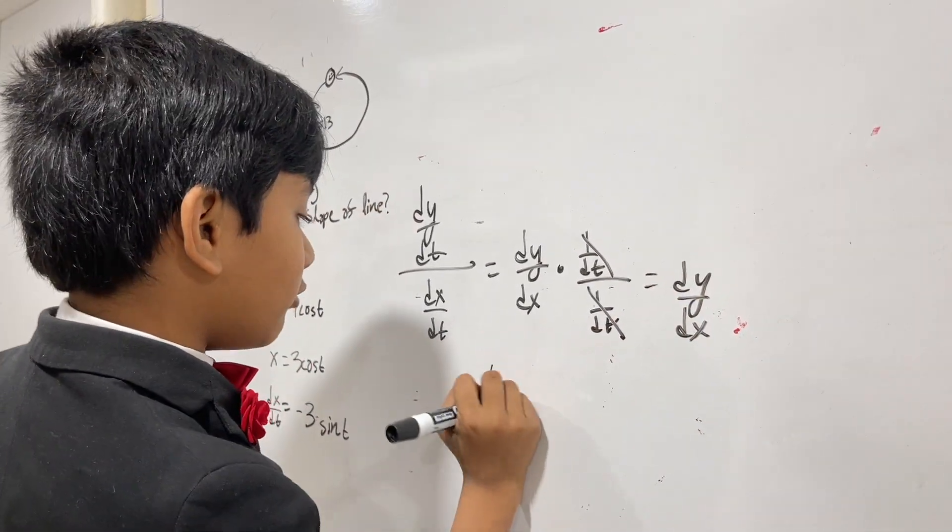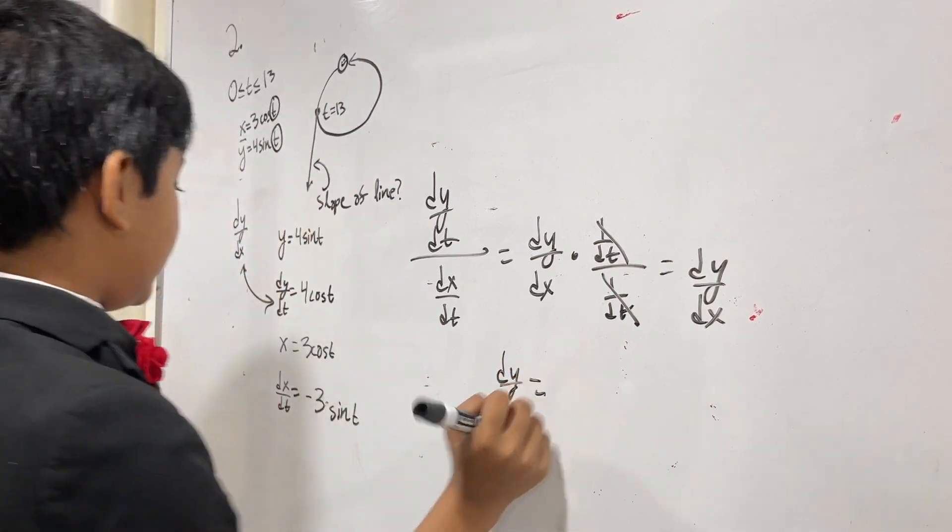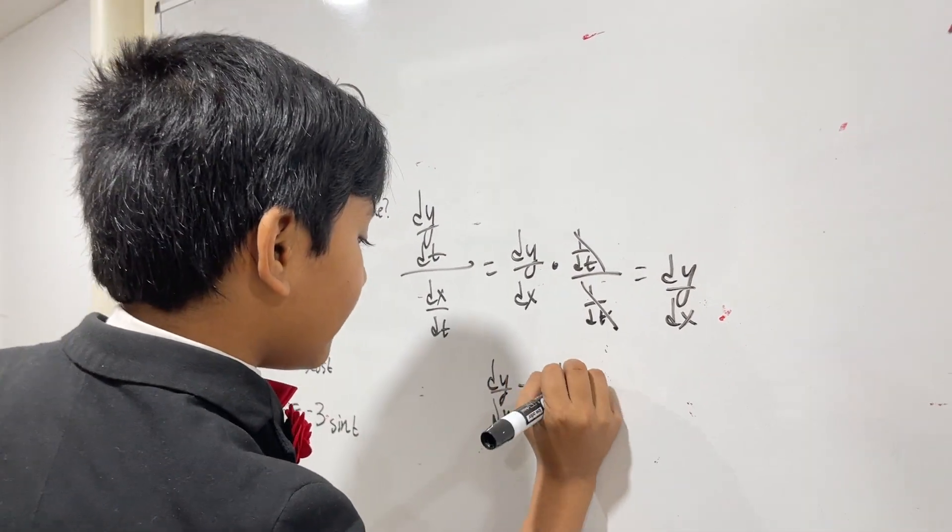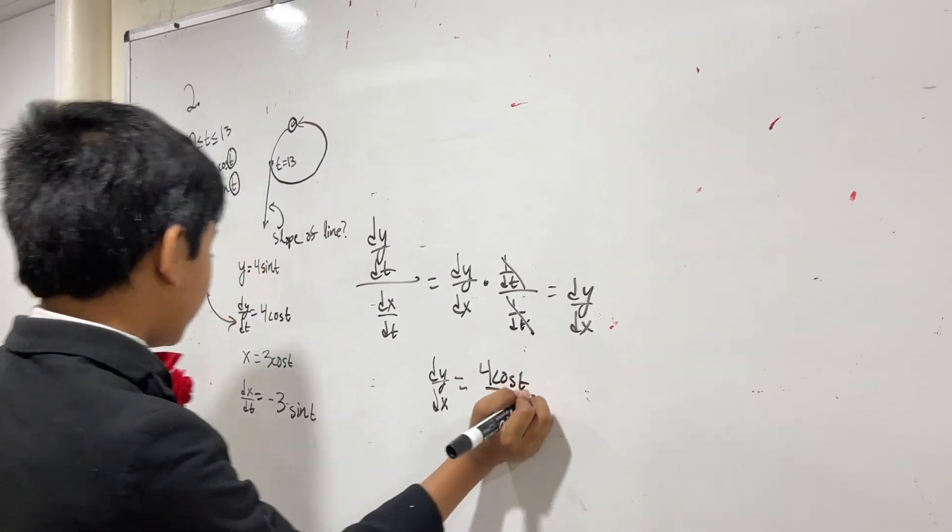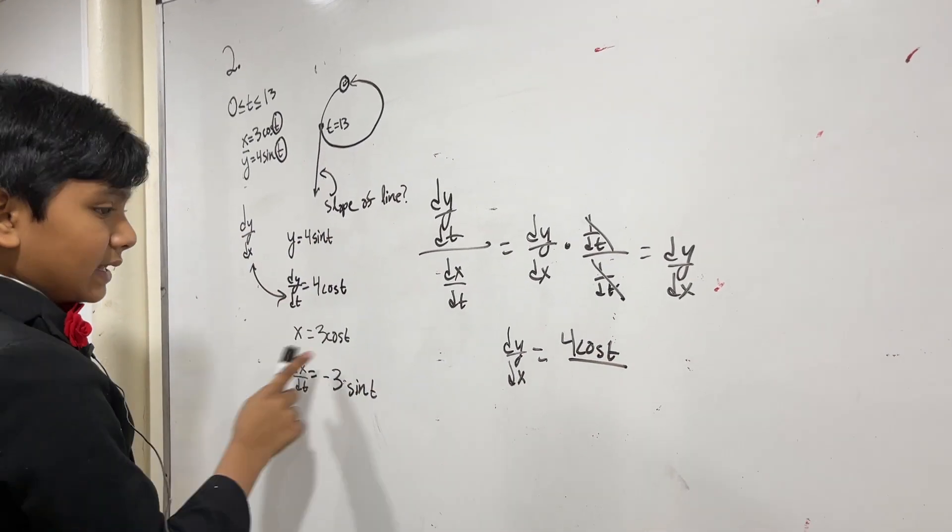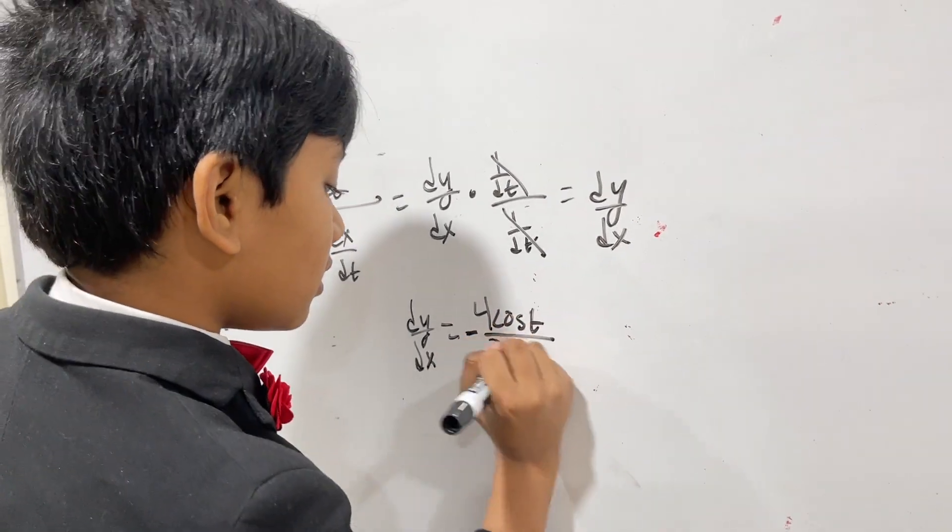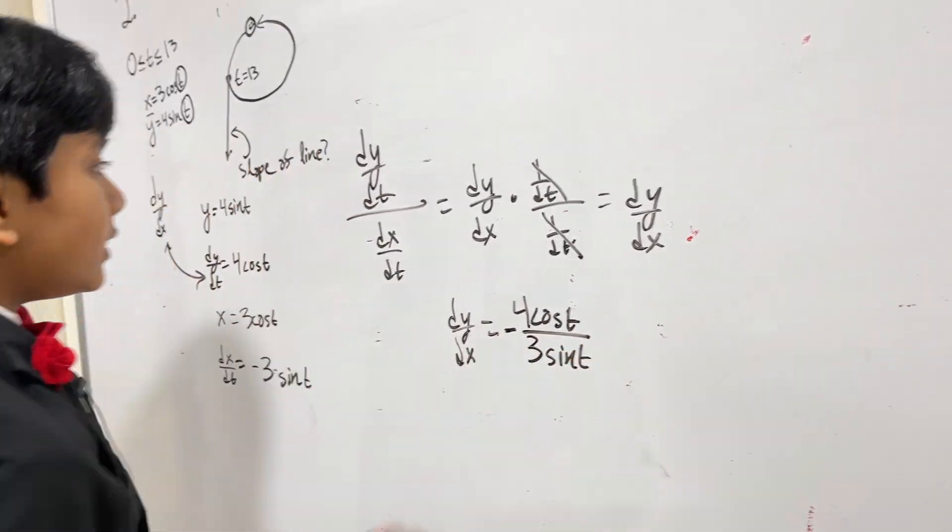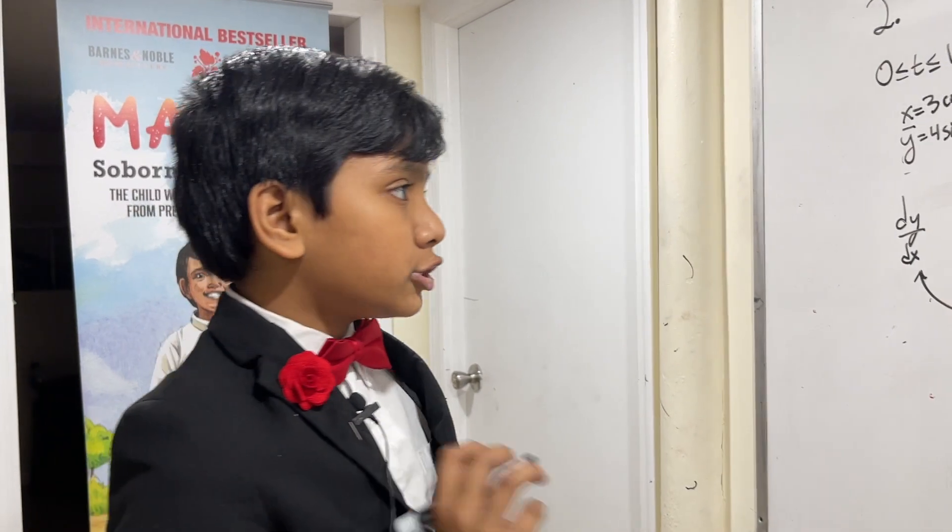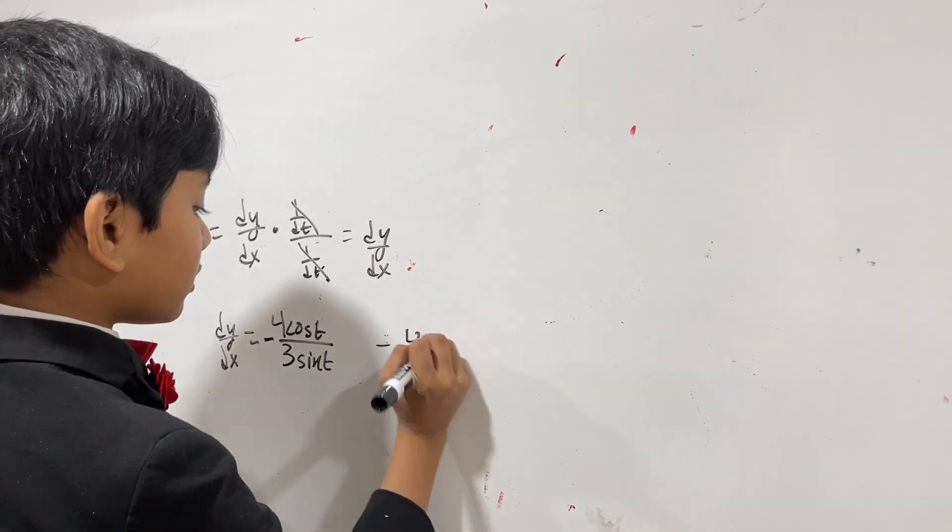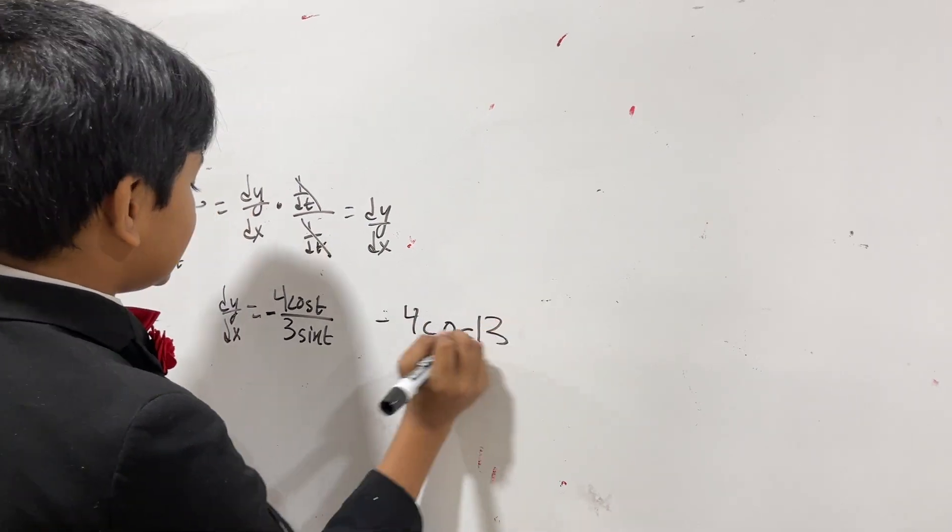So what is dy/dt over dx/dt? Well, dy/dt is 4 cosine t, dividing that by dx/dt is minus, let's put that in the front, 3 sine t. And now, all we need to do to find the slope of the tangent line at 13 is plug in t to be 13.